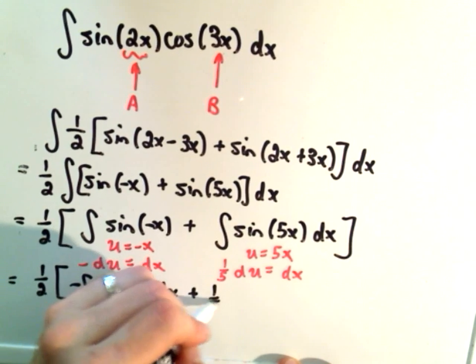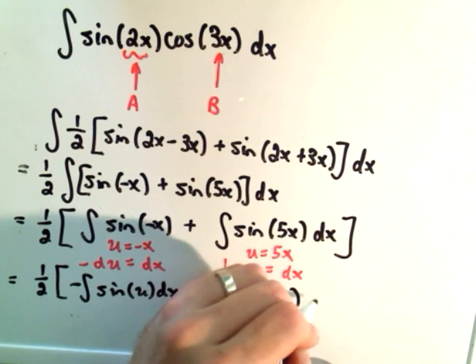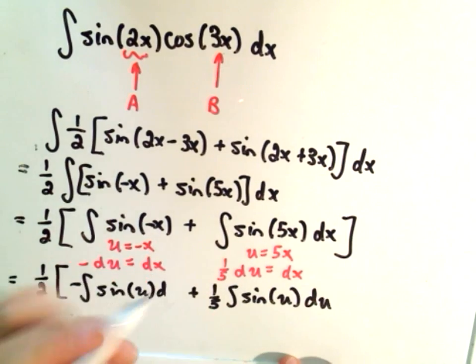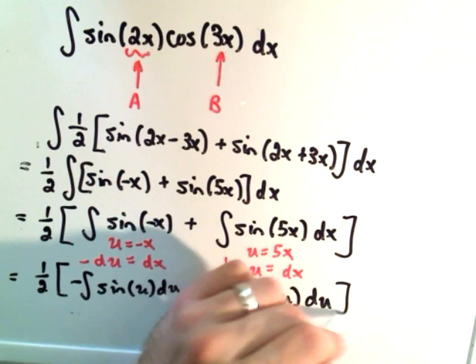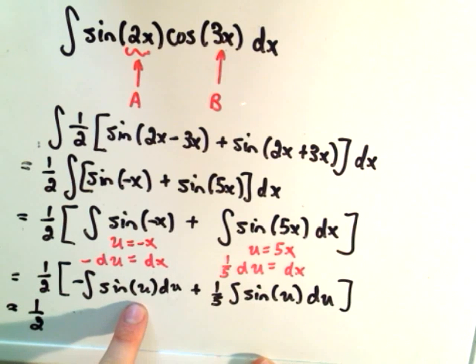So I'll get negative sine of u for the first one. I'll get one-fifth the integral sine of u for the second one. Whoops, I wrote dx, I should have wrote du. So if we integrate, I'll get one-half.